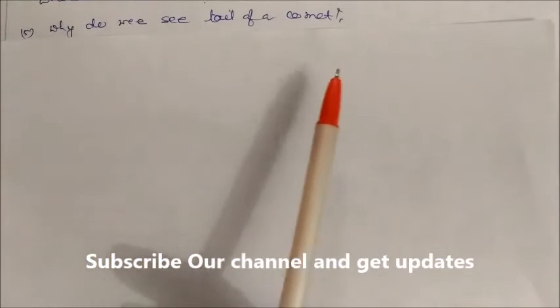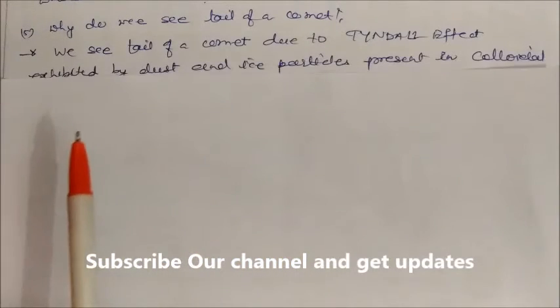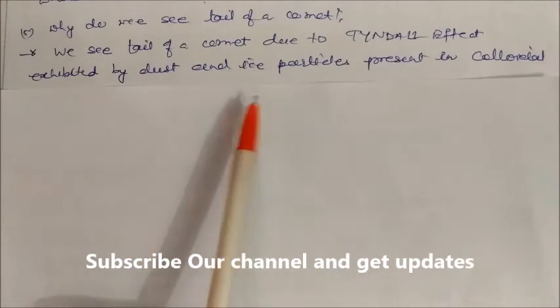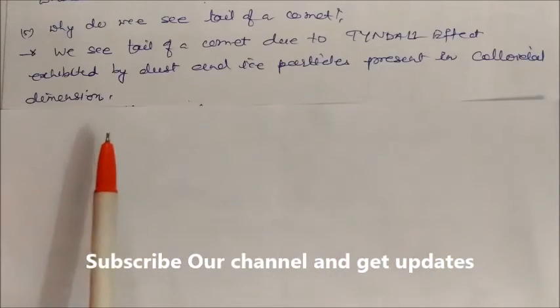Why do we see tail of a comet? We see tail of a comet due to the Tyndall effect exhibited by dust and ice particles present in the colloidal dimensions.